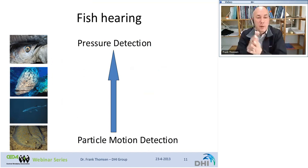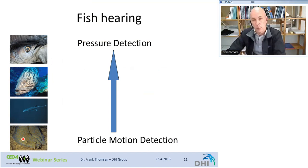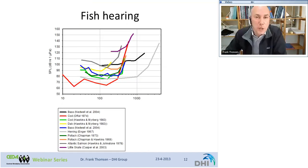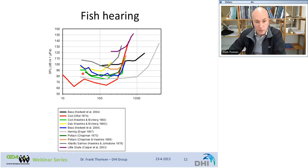Fish hearing is quite complex. Fish can detect the particle motion component of the sound wave — just the movements, the velocity of the particles — and they can also detect pressure, depending on the species. Flatfish, for example, can only detect particle motion and are relatively poor in sensitivity. Herring, however, is very sensitive to sound and can detect pressure. Shown are audiograms from several fish species. Notably, the x-axis goes only to 1 kilohertz, not 100 kilohertz, telling us that fish have a much more restricted hearing bandwidth — most fish don't hear well above 1 kilohertz.